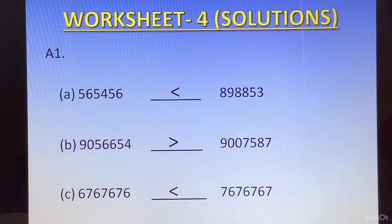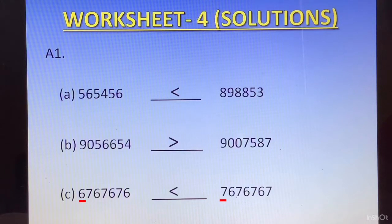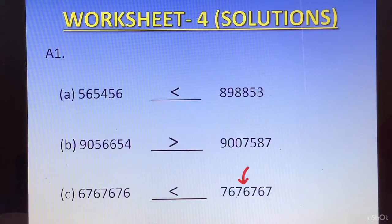The third one also had equal number of digits. When we look at the first digit, we have 6 in one number and 7 in the other. The number that starts with 7 — 7676767 — is greater.